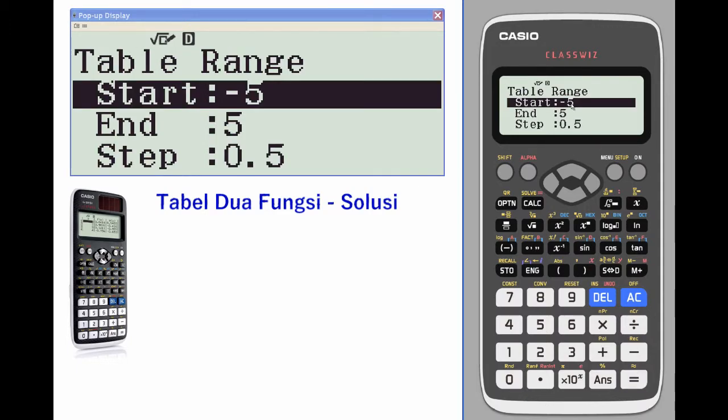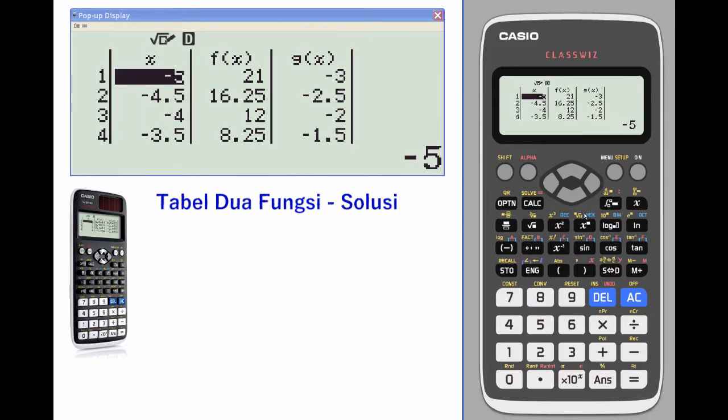We'll set our table range of negative 5 to 5 and steps of a half, and what we're looking for is a solution. So we're looking for a place where the x value is the same, which will always be the same, but the y value or the f of x value and g of x value will both be the same.